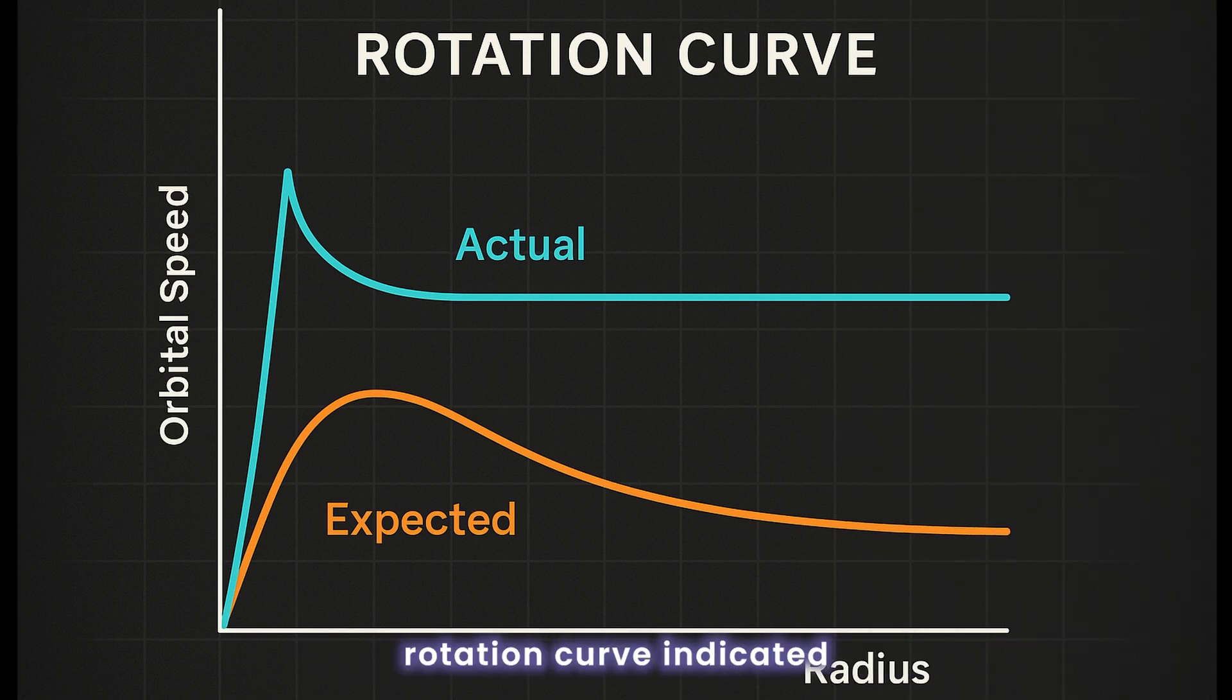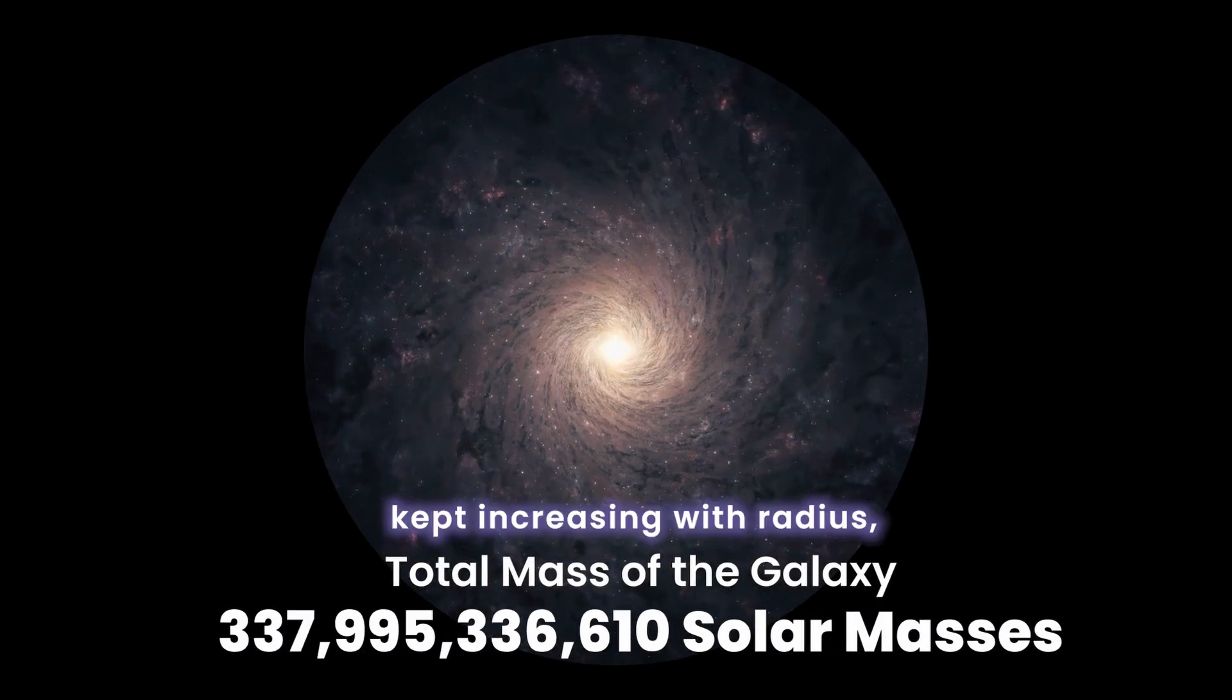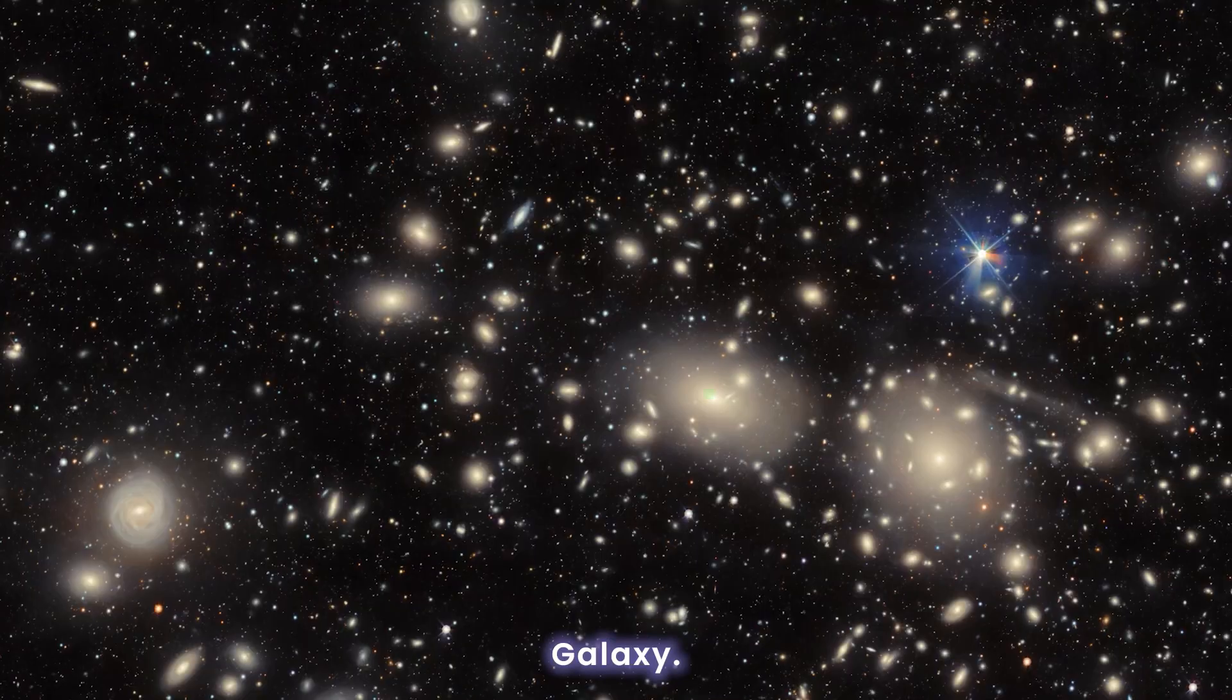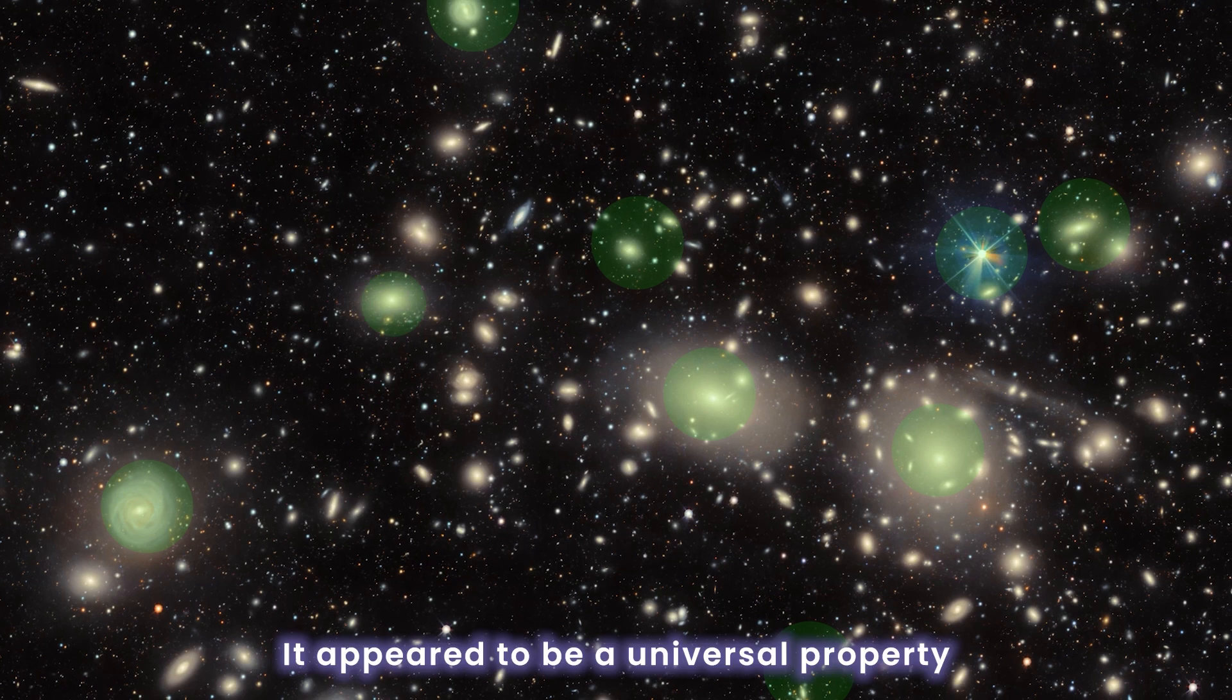This flat rotation curve indicated that the total mass of each galaxy kept increasing with radius, even in regions where no stars were visible. Galaxy after galaxy showed the same pattern. This wasn't limited to unusual cases. It appeared to be a universal property of spiral galaxies.